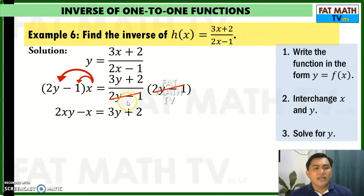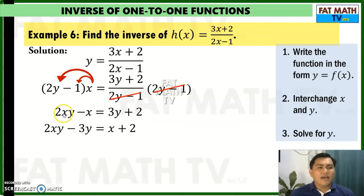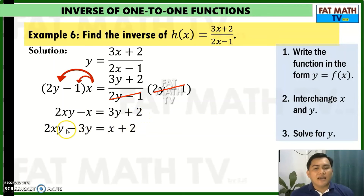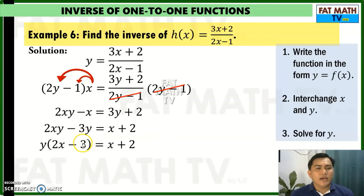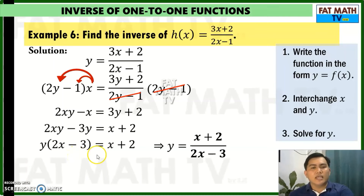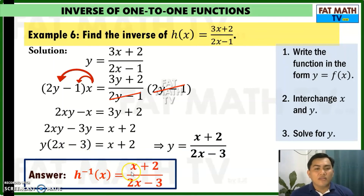Put 3y to the left and negative x to the right. We have 2xy; transferring 3y to the left gives negative 3y; transferring x to the right gives positive x; copy plus 2. Factor y: y times (2x minus 3) equals x plus 2. Divide both sides by 2x minus 3, giving y equals x plus 2 over 2x minus 3. So h inverse of x equals x plus 2 over 2x minus 3.